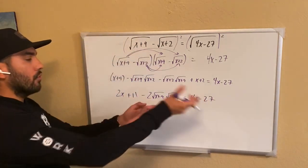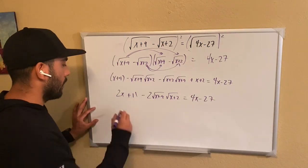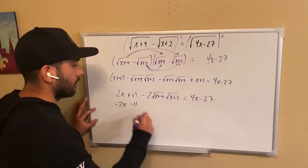And that's equal to the right side there. Very nice, right? Okay, let's subtract the 2 to the other side and the 11 to the other side.